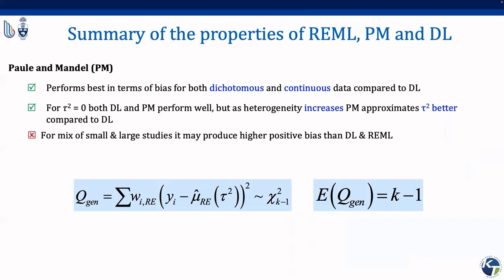The Paule-Mandel method profiles the generalized Q statistic with random effects weights until it equals its expected value. Simulation studies show that PM reduces bias compared to DL as heterogeneity increases, for both continuous and dichotomous data. However, PM may overestimate heterogeneity when true heterogeneity is small and there are few studies, may underestimate it for rare events, and can increase bias when study sizes differ importantly in a meta-analysis, due to random effects weights not adequately reflecting size differences in the presence of heterogeneity.